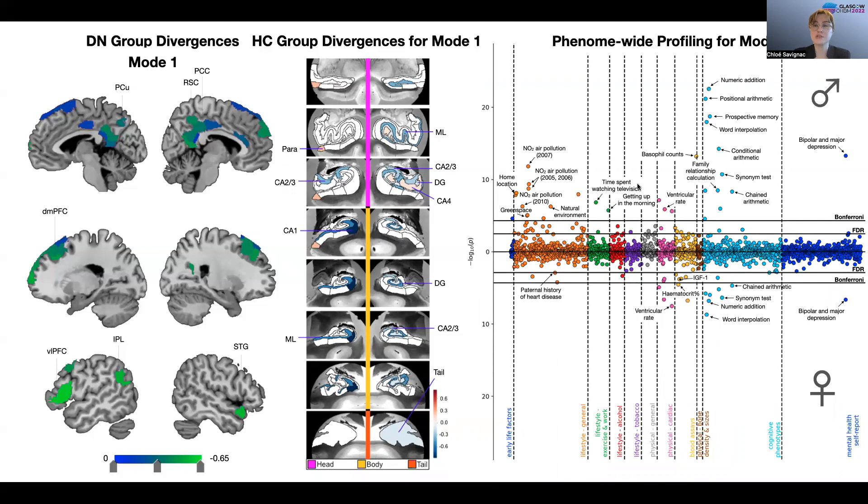So here on these Miami plots, each dot represents a single Pearson correlation coefficient. And on the y-axis, we show the negative logarithm of the p-value, so the higher the dot, the more robust is the correlation.